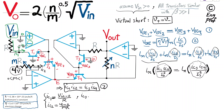For IC3, the op-amp on the right side is also in linear region. Virtual short forces the negative terminal to 0 volts. The current through resistor R flows from Vout on one side to 0 volts on the other, and goes through the collector of T3. Therefore IC3 = Vout / R.